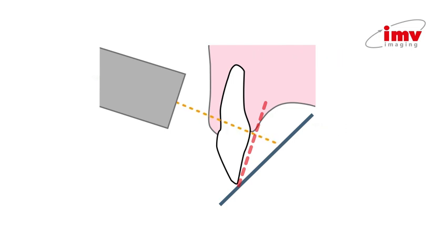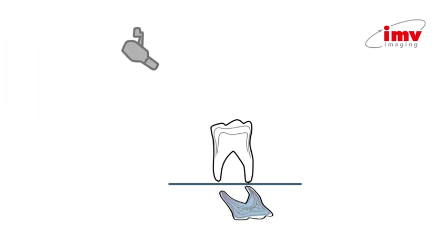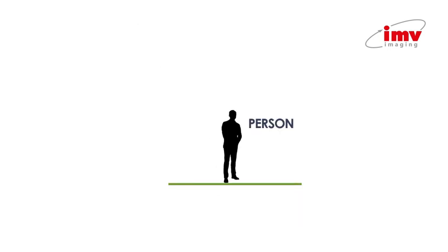A useful way of thinking about this technique is to think about shadows. Our x-ray image is the shadow of the tooth. If we replace our tooth with a person, our plate with a flat piece of ground and our generator with the sun, our x-ray image is like the shadow our person casts on the ground.